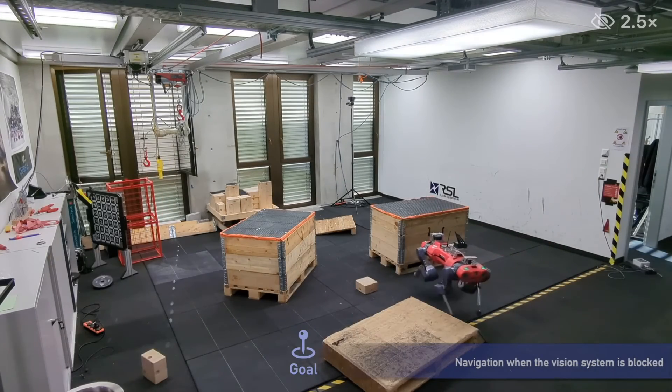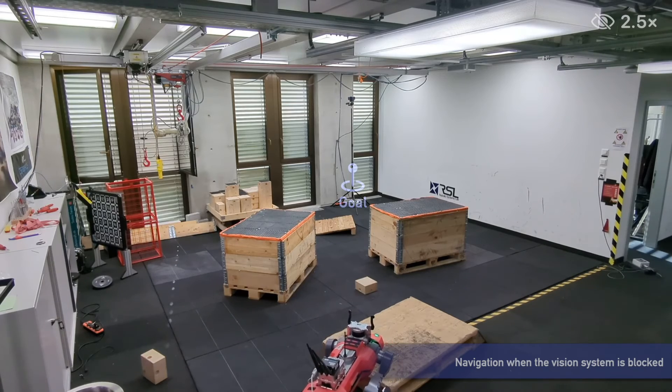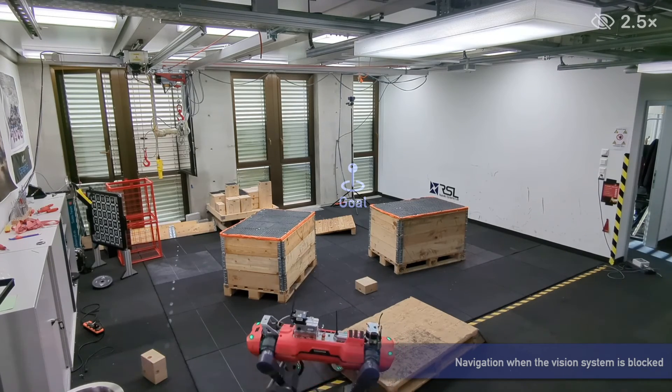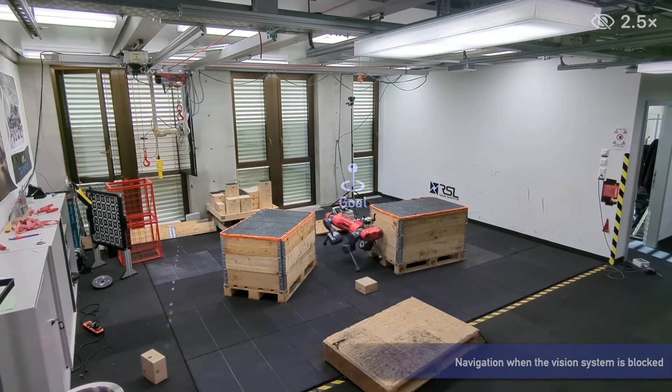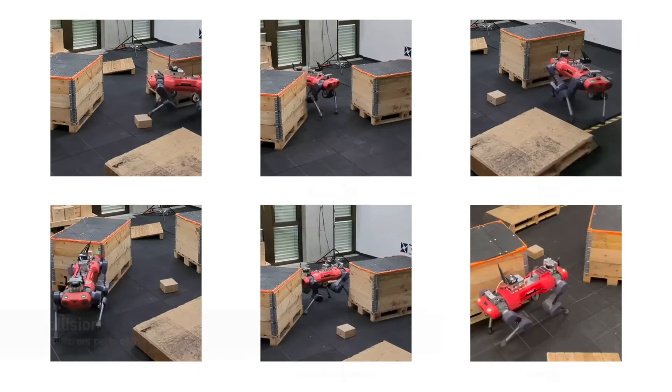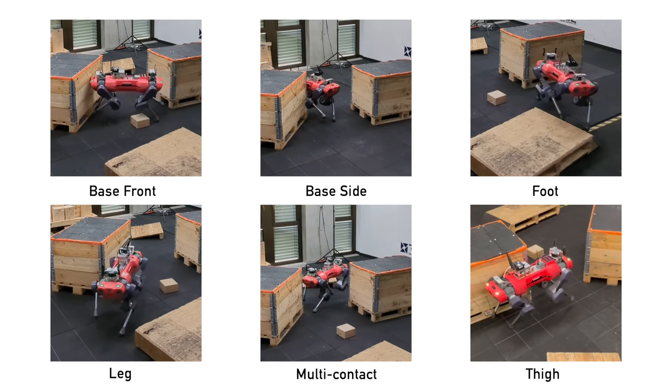Our policy successfully transfers to the real world. Here, we manually disable all vision systems. The robot efficiently detects collisions, whether they occur at the base front or side, thigh, leg, or in multi-contact scenarios, showcasing its generalization capabilities.